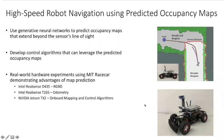Hello, this is a video submission for the paper entitled High-Speed Robot Navigation Using Predicted Occupancy Maps.